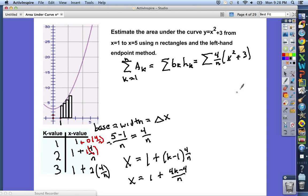But at this point, we would know, instead of x, plug in 1 plus 4k minus 4 over n. For that x value, put the quantity in parentheses, and then you'd be well on your way to solving this problem.